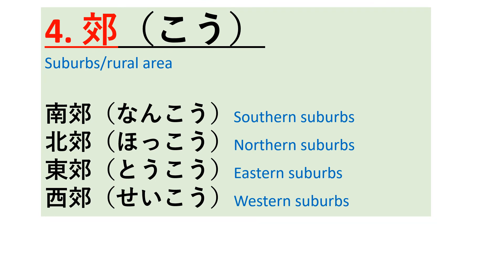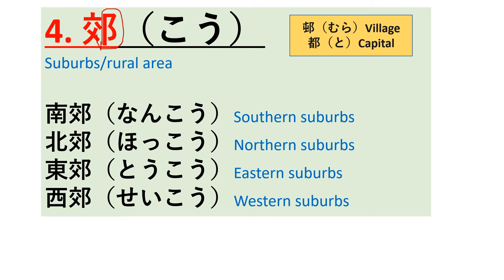In the last kanji, the radical is again attached to the right side of 'ko.' The meaning of this radical is something related to area — for example, village or capital. This radical represents area. So the meaning of this kanji is suburbs or rural area.